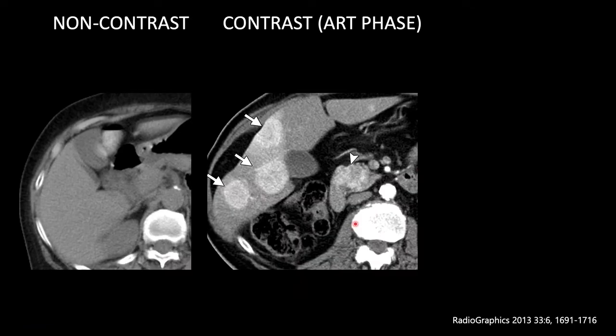Take this example, taken in the arterial phase. Notice that the aorta is very enhanced. There are intensely enhancing lesions in the right lobe of the liver which are very obvious against the background liver, which is not yet at its peak enhancement.